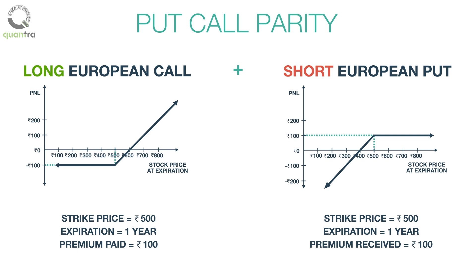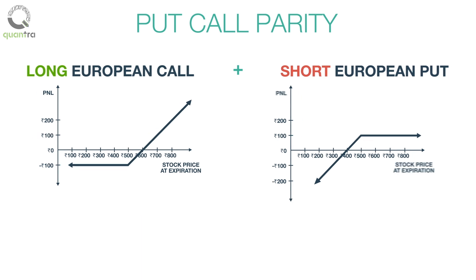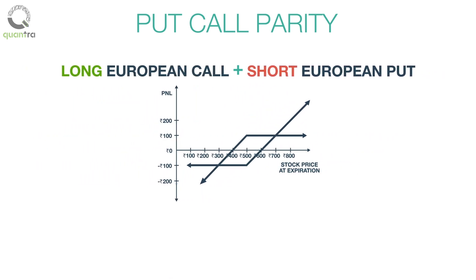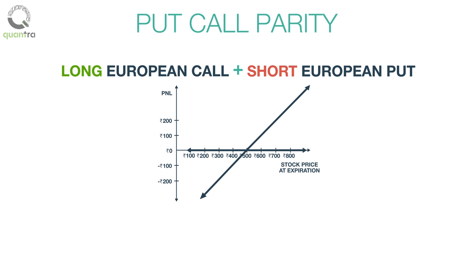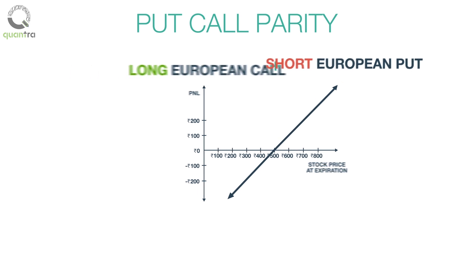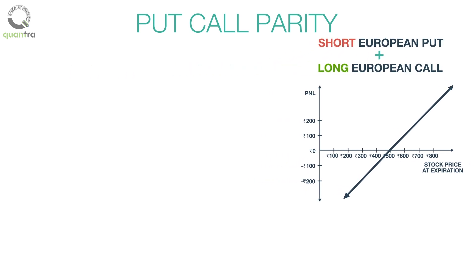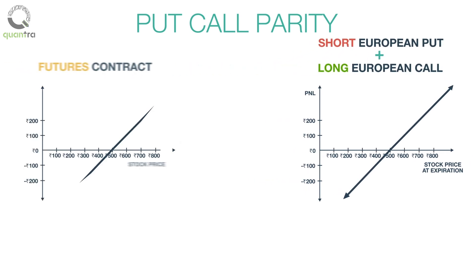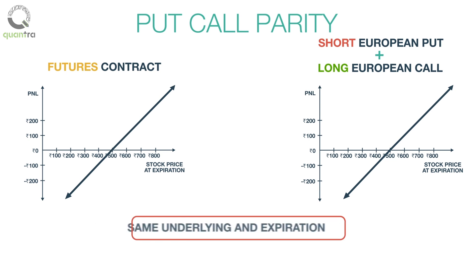You can visualize the payoff diagram for the long call and the short put. If you add the profit and loss on the long call to that of the short put, then your profit and loss would be exactly equal to the futures contract for ABC stock bought, expiring in one year.